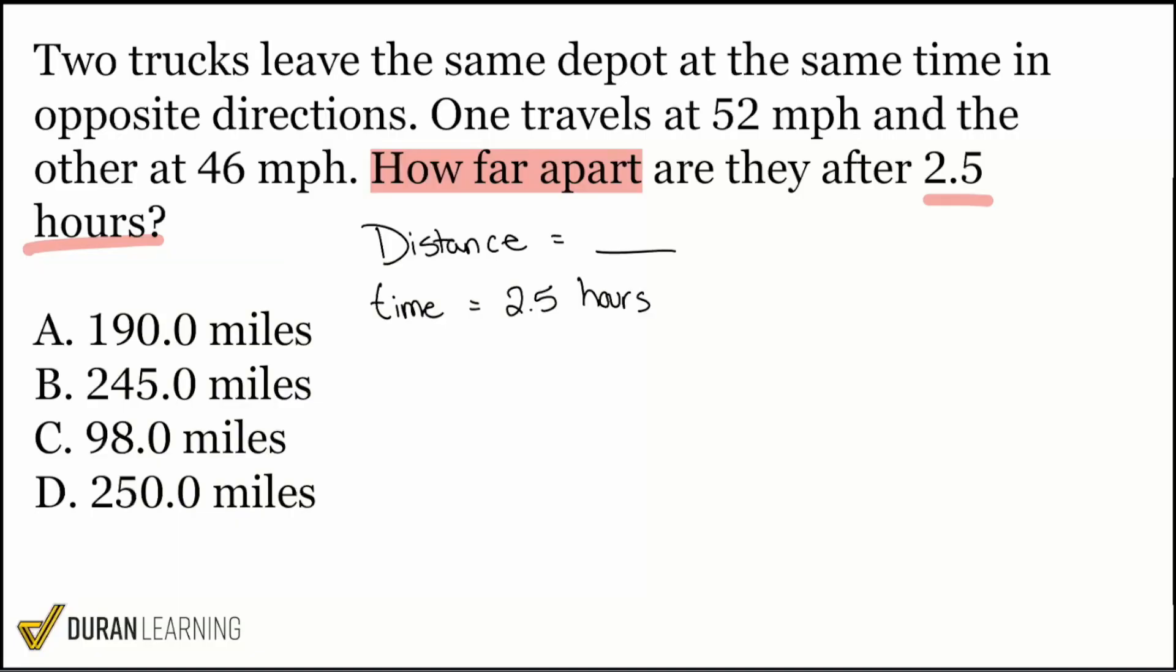So with that said, now let's read the situation here. Let's get the story so we can really understand how we're going to work with the 2.5, how we're going to work with everything else that's written in the problem. Because remember, everybody, it's not about what the numbers are. It's about what the numbers mean. One more time. It's not about what the numbers are. It's about what they mean. Two trucks leave the same depot at the same time in opposite directions.